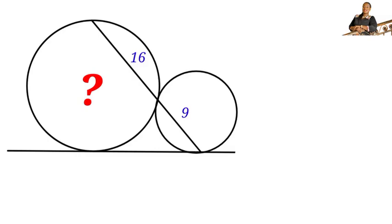To find the area of the bigger circle, we know that the area of a circle equals pi r squared. So we have to find the radius of the bigger circle before we can find the area.